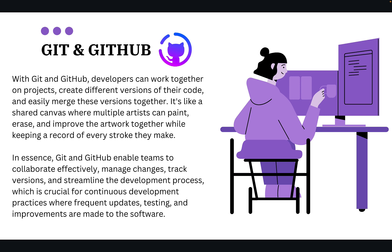Code versioning is important. When we version our code, we are merging our code into our integration branch. Consider a scenario where you are not versioning your code and not using Git or GitHub. If one day you find out that a week ago some incorrect code was pushed to production, how can you roll back that particular code?